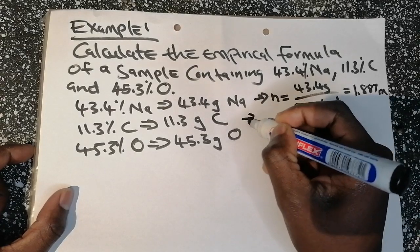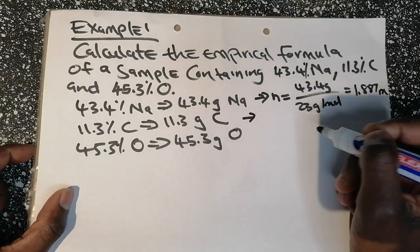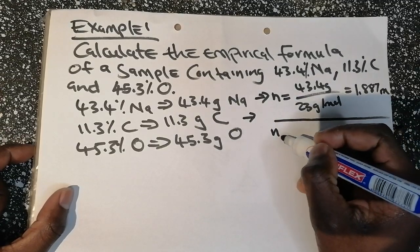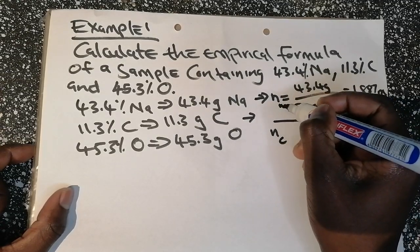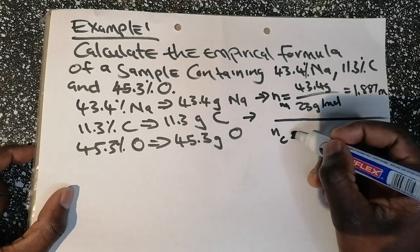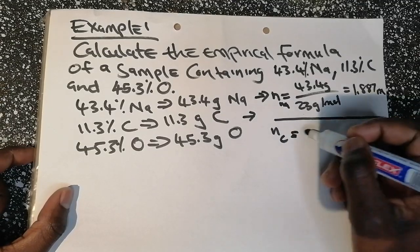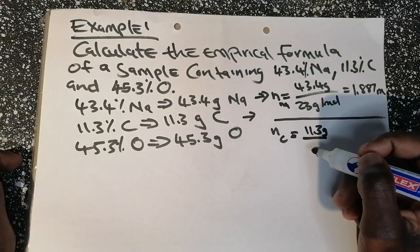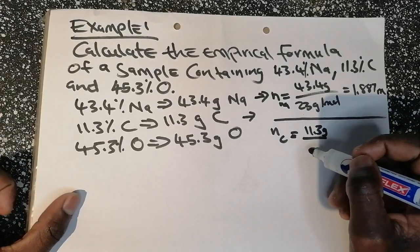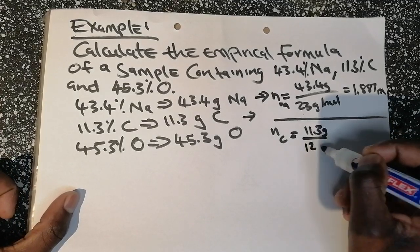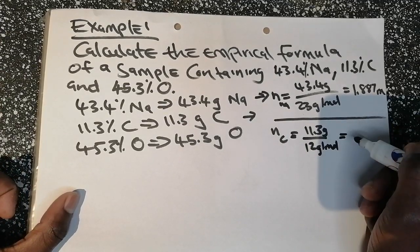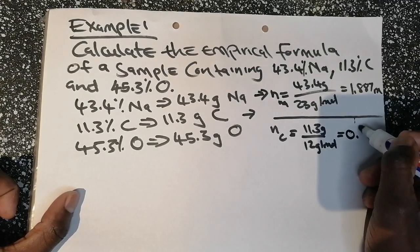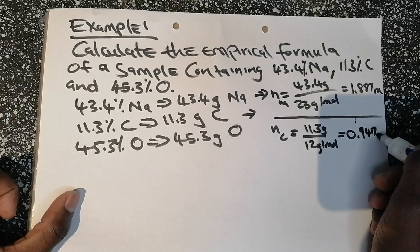For carbon: moles = 11.3 grams divided by the atomic mass of carbon, which is 12 g/mol. That gives us 0.9417 moles of carbon.